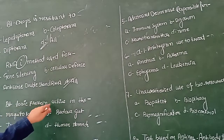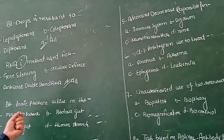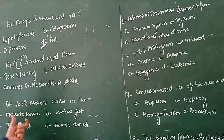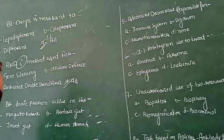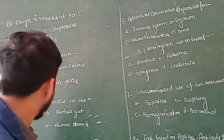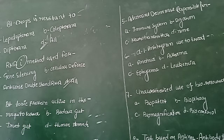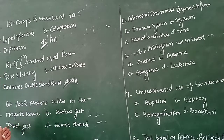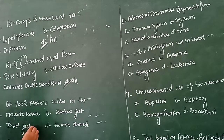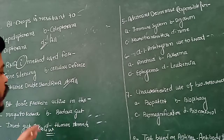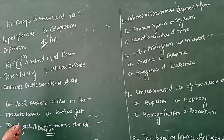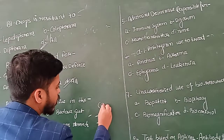Bt toxin proteins are synthesized by genes called cry genes. There are different types such as cry1Ab and cry2Acg. The Bt toxin is active in the insect gut. When an insect ingests plant material containing the toxin, due to the alkaline pH in the insect gut it gets activated. The inactive form is called pro-toxin, encoded by cry genes.